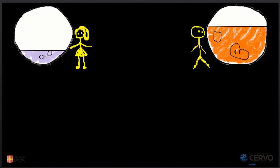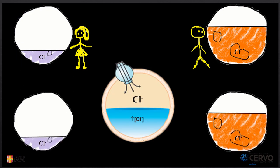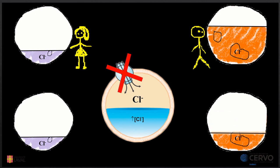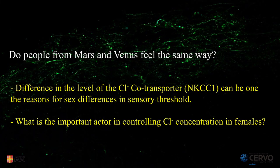Then we decided to block the chloride co-transporter to find out its contribution in this higher and different chloride concentration. And we found that by blocking this co-transporter, chloride concentration decreased significantly in the male, but it doesn't change in female. So we think this co-transporter can be one of the reasons for the sex differences in sensory sensitivity.